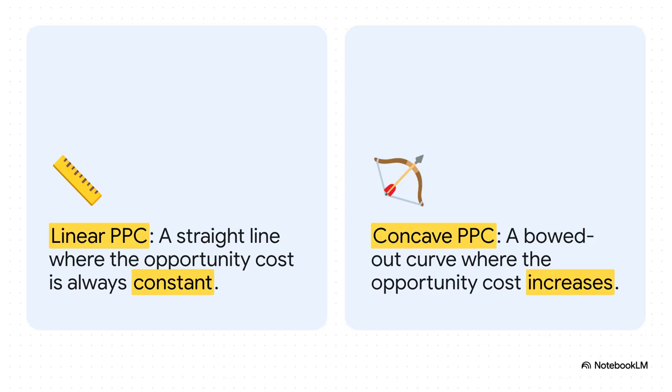You see, if a PPC were a perfectly straight line, that would mean the trade-off is always constant. But in the real world, that's almost never how it works. The curve is usually bowed out. And that shape tells us a much more interesting and realistic story about increasing costs.